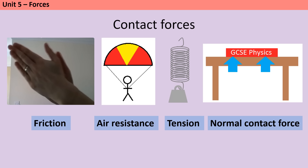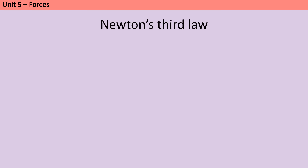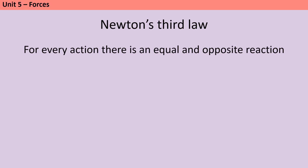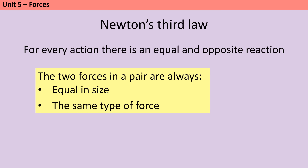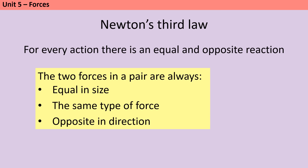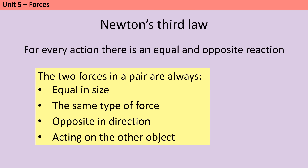Here the book is pushing down on the table due to its weight and then the normal contact force from the table is pushing back. Newton's third law says that for every action there is an equal and opposite reaction. This means that forces always come in interaction pairs. There are four things that are always true about the pair of forces: the two forces are of equal size; they must be the same type of force; they're acting in opposite directions; and they're always acting on the other object — so the book was pushing down on the table and the table was pushing back on the book.